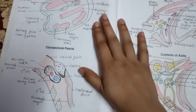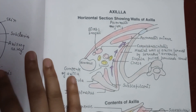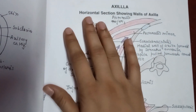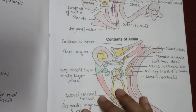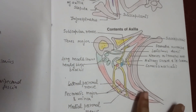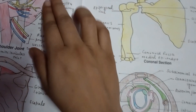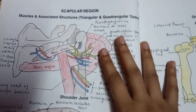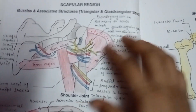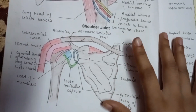Each and every diagram is differentiated very beautifully. In the case of axilla, the diagram is differentiated into horizontal section showing walls of axilla and the contents of axilla. After that, the scapular region — muscles and associated structures. This is the whole diagram, and this is the shoulder joint.